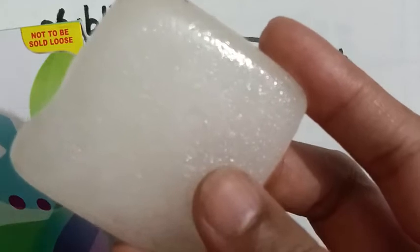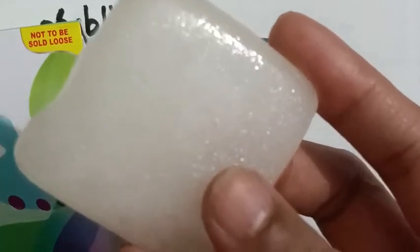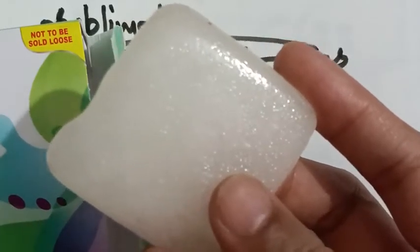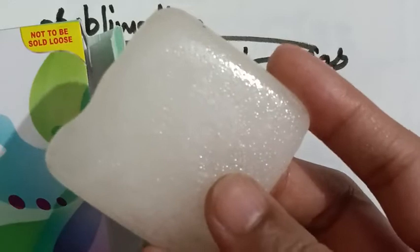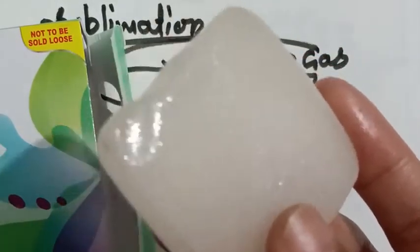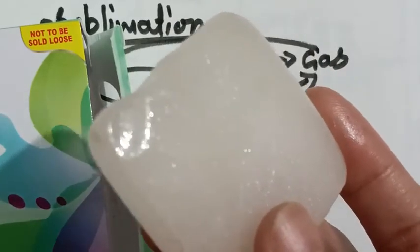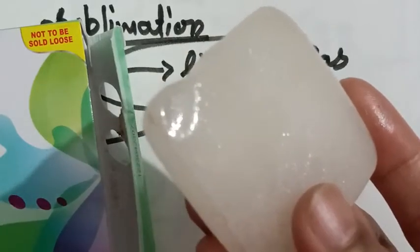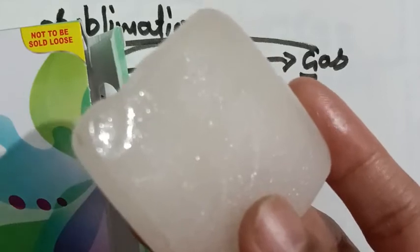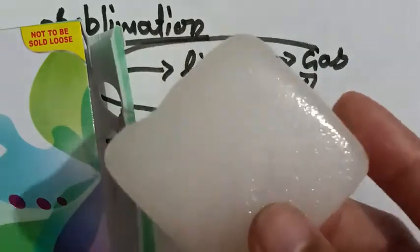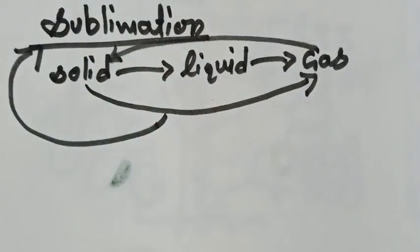It directly changes into vapor without melting, and this process is known as sublimation. Examples include air fresheners, naphthalene balls — also known as moth balls — camphor, which also sublimes at room temperature, as well as iodine and ammonium chloride, which also show the process of sublimation.